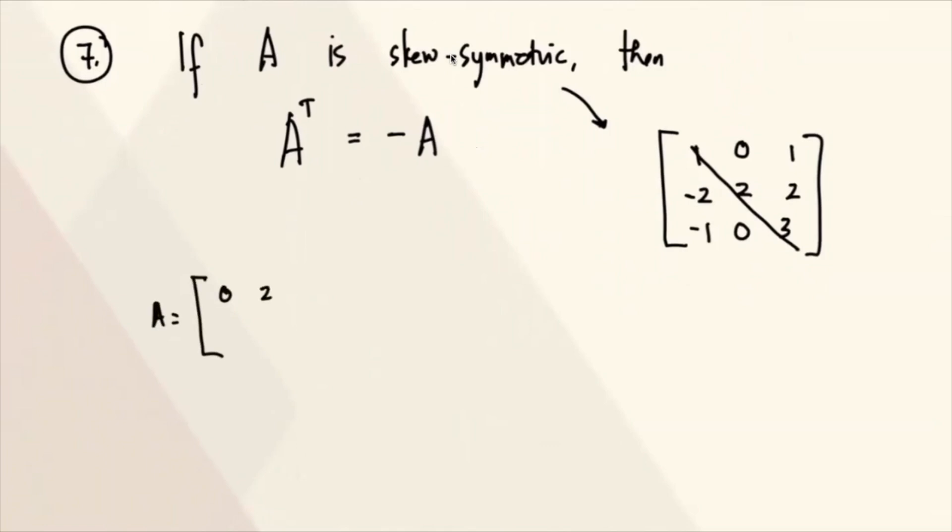So let's have a simple matrix. 0, 2, negative 2, 0. So that is skew symmetric, no? So the transpose for that is 0, negative 2, 2, 0. Which is, if you see, if I'm gonna extract negative 1, that is 0, 2, negative 2, 0. So isipin mo, this is the negative, and then this is the A.